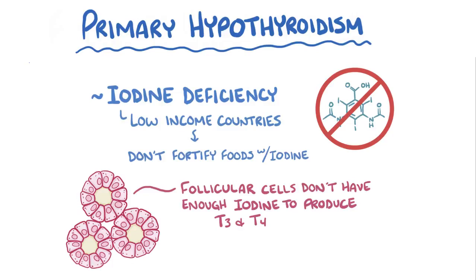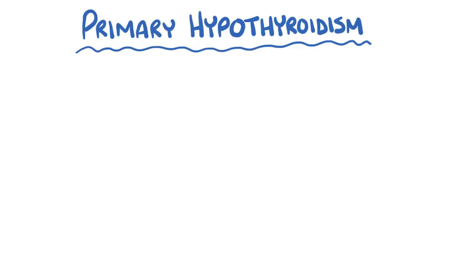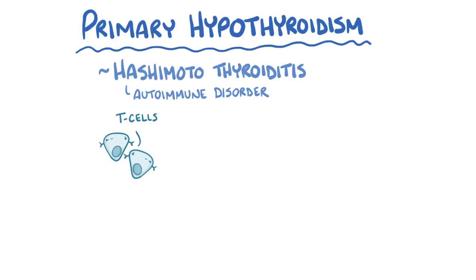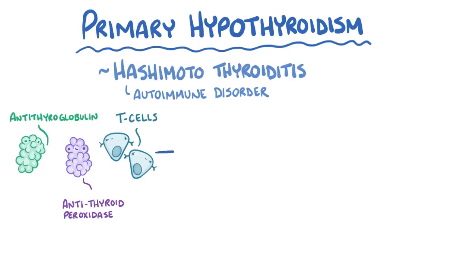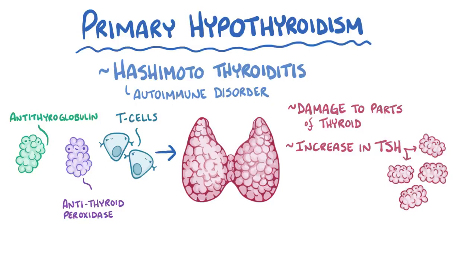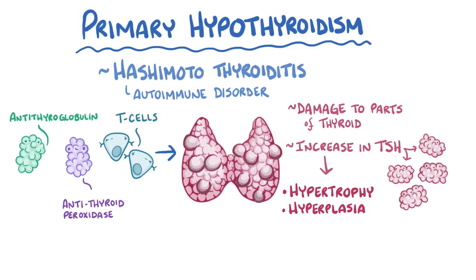In countries that do fortify foods with iodine, the most common cause of primary hypothyroidism is Hashimoto thyroiditis, which is an autoimmune disorder where T cells and autoantibodies like antithyroid peroxidase and antithyroglobulin infiltrate the thyroid. Damage to parts of the thyroid and the subsequent increase in TSH leads to thyroid hypertrophy and hyperplasia — the thyroid responds by increasing the size and number of healthy follicular cells, causing it to enlarge. Unfortunately, this compensation is short-lived, and eventually the autoantibodies cause so much follicular cell damage that they destroy thyroid function altogether.